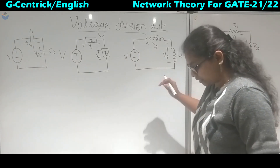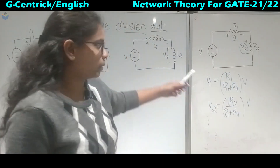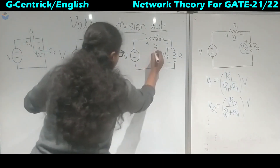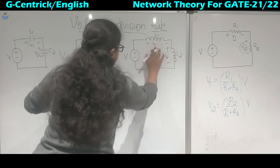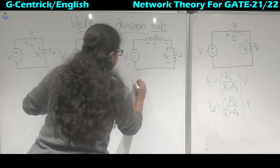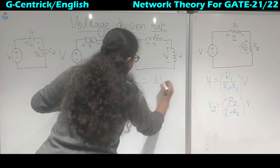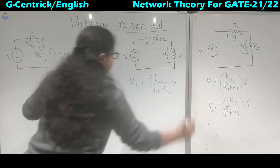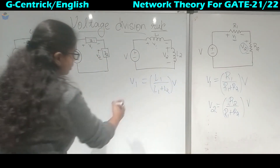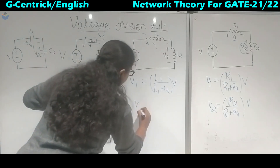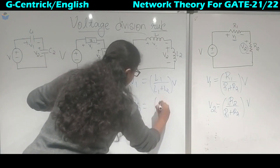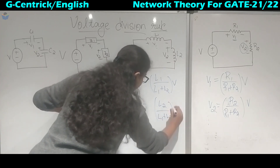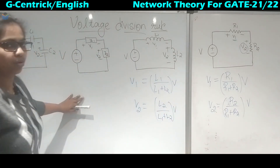Coming to the inductor, the same rule applies as for resistors. To calculate V1, it is L1 upon the summation of the two inductors, multiplied by the total voltage. So if you have to find V2, it is L2 upon L1 plus L2, multiplied by the total voltage.